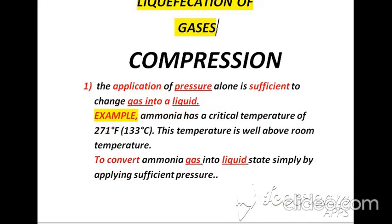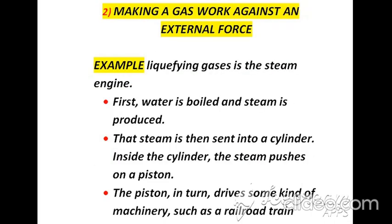Three methods are available for the liquefaction of gases. The first one is compression — in this method, pressure alone is the driving force to convert a gas into a liquid. For example, ammonia has a critical temperature of 133°C, which is well above room temperature, so to convert ammonia gas into a liquid state, we simply apply pressure and the gas converts to liquid.